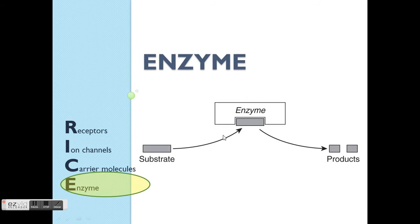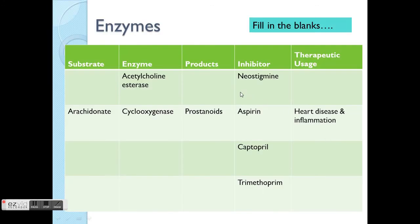The last part covers enzymes, which is relatively simple since you've already learned a lot about them. A substrate is converted by an enzyme into one or more products. There are many examples of enzyme-targeting drugs in the table here and the next slide — go and look up the substrate, products, enzyme, and therapeutic usage for each drug.